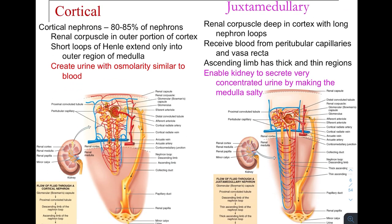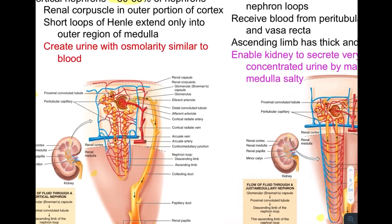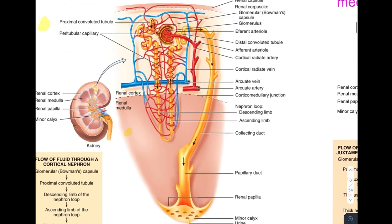There are two types of nephrons. The cortical nephron composes 80% to 85% of all nephrons. The second type is the juxtamedullary nephron. The cortical nephron begins higher up in the cortex and does not go as deep into the medulla. The juxtamedullary nephron is called that because the deeper part goes way deep into the medulla.